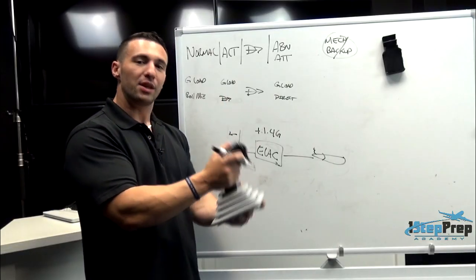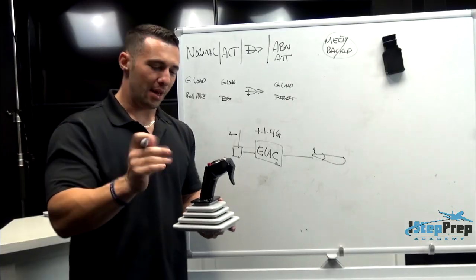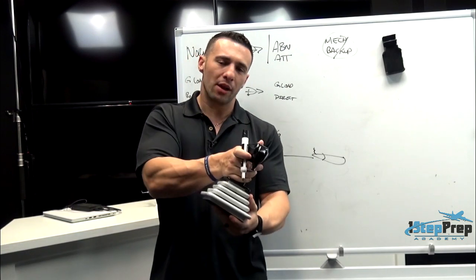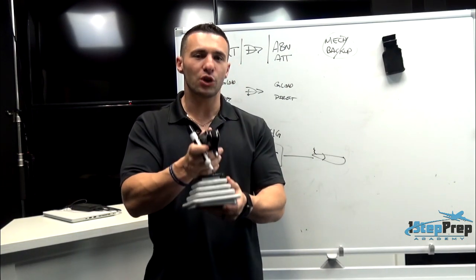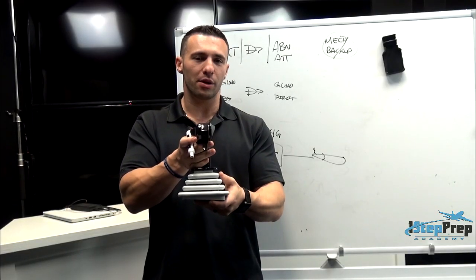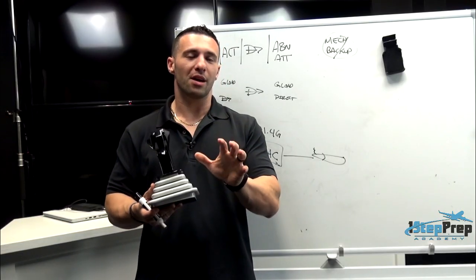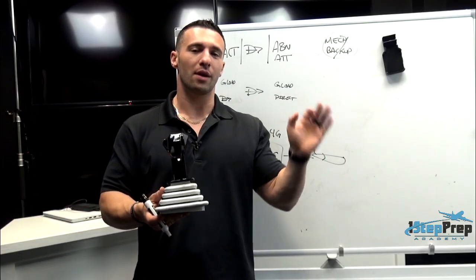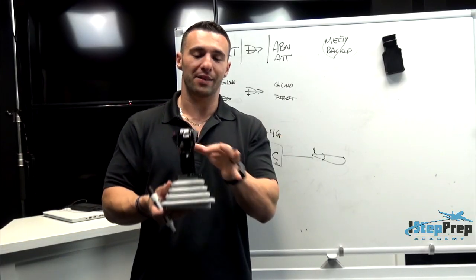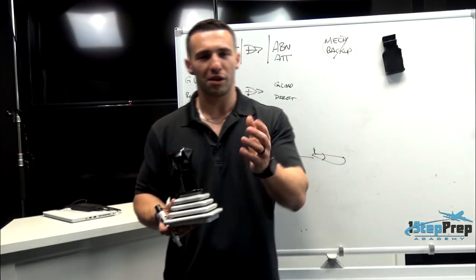So if you're pulling back 20% of the side stick's full range of travel, you might not get 20% elevator deflection — you're going to get the appropriate deflection that yields a 1.4 G rate of bringing the nose up. In the ailerons, it's the same thing. A full aileron input commands 15 degrees per second rate of roll. So a 20% side stick deflection doesn't mean 20% aileron deflection — it deflects the aileron appropriately to give you your commanded rate of roll per second. Let's go to the sim to validate this.